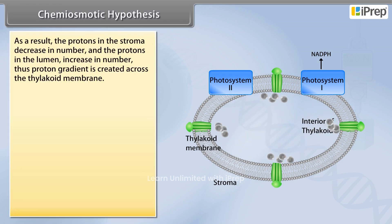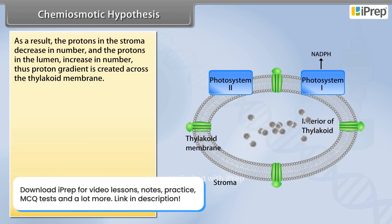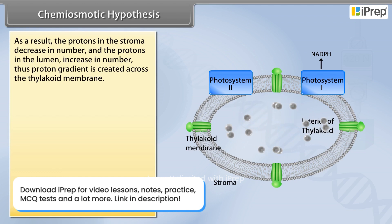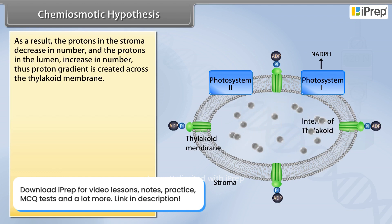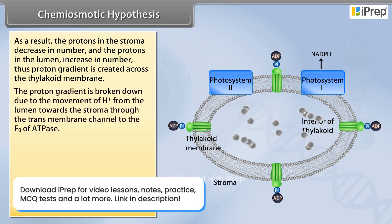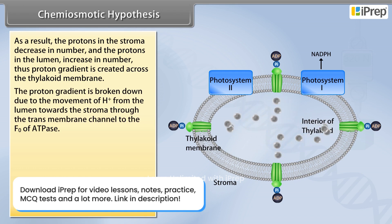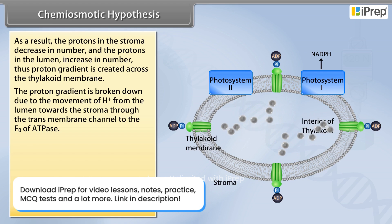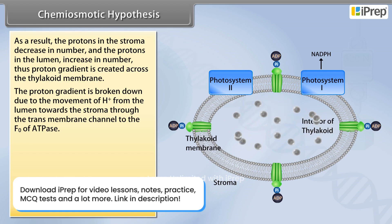As a result, the protons in the stroma decrease in number and the protons in the lumen increase in number. Thus, a proton gradient is created across the thylakoid membrane. This gradient is broken down due to the movement of H+ from the lumen towards the stroma through the transmembrane channel of F0 of ATPase.